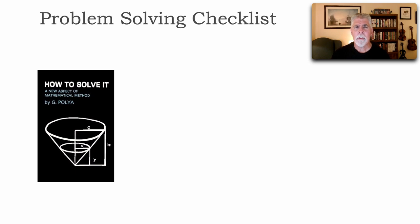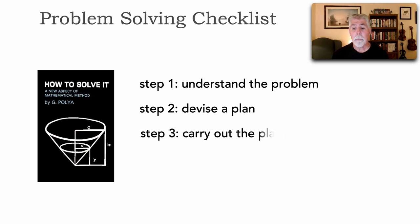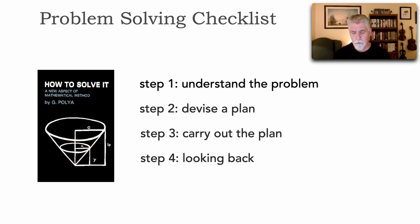Professor Polya suggested four main steps in tackling a complex problem. The first is to understand the problem. The next step is to devise a plan. The third is to carry out that plan. And then the fourth is essentially a retrospective — looking back to verify and learn. Isn't it amazing? We think retrospectives came about from the Agile Manifesto, but people leveraging this checklist in 1945 were already doing retrospectives.